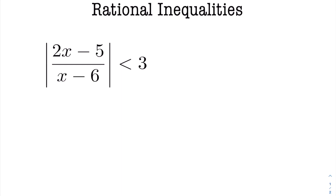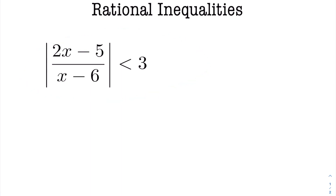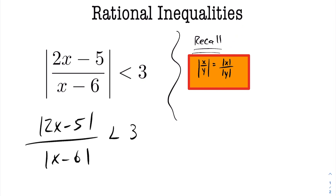In today's lesson we're going to be looking at rational inequalities. In this first question we have a rational inequality involving absolute values. The first property to observe is that the absolute value of x over y is equal to the absolute value of x over the absolute value of y. Applying that property, we rewrite the expression accordingly.